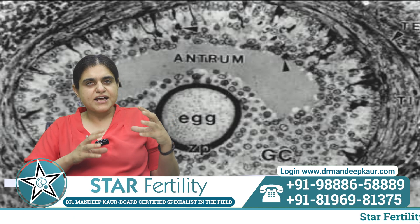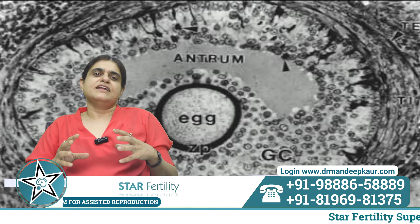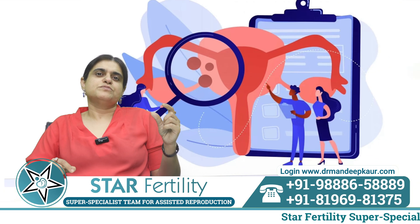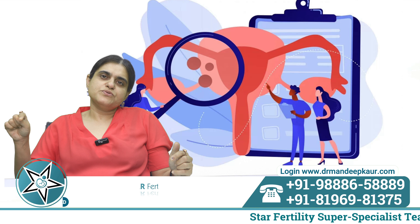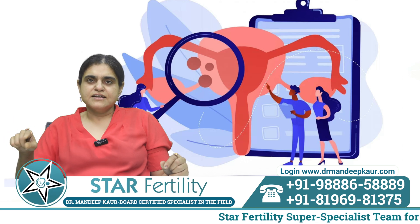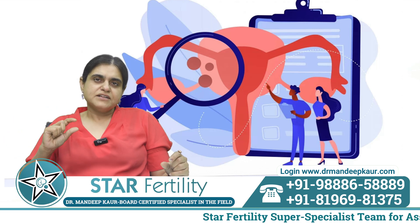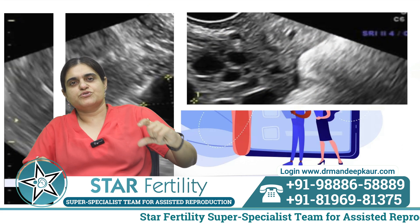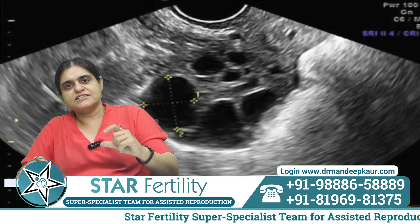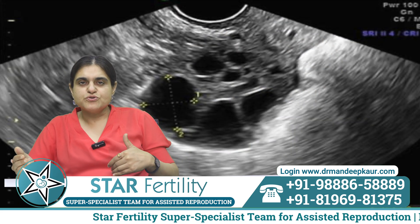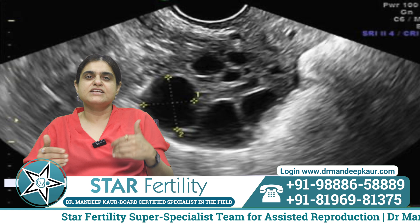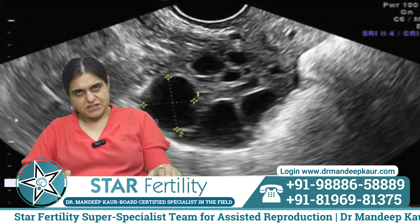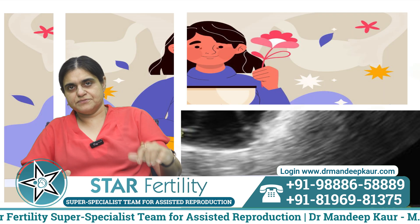Synchronized with the follicle, we also look at the lining of the uterus. The egg produces a hormone which increases the endometrial thickness, and the endometrial thickness is seen growing proportionately to the follicle. Once the follicle is ready, the endometrium should also grow proportionately and synchronized with it, reaching about 8 to 10 millimeters in thickness.